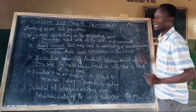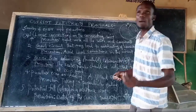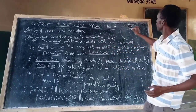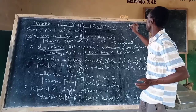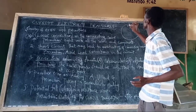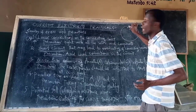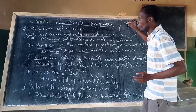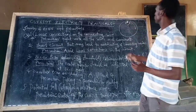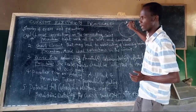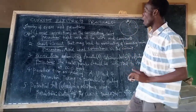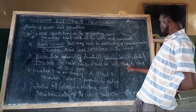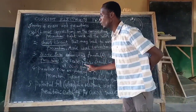Kwa hii mshale, hakikisha kama unatumia galvanometer, kama unatumia ammeter, kama unatumia voltmeter, hakikisha mshale unaenda kusoma kwenye exact zero points au zero marks, kwa sababu it is where now we should start. To avoid zero error, you have to make sure that the pointer should be adjusted to start at zero mark.